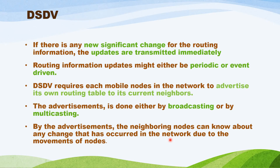The periodic transmissions of updates of routing tables help maintain the topology information of the network. If there are any significant changes to the routing information, updates are transmitted immediately to nearby nodes. The routing information updates might either be periodic or event-driven. If the mobility is very less or there is no mobility in the mobile ad-hoc network, it will update periodically. If one or two nodes are moving, only that particular routing information is updated — that is called event-driven routing update.